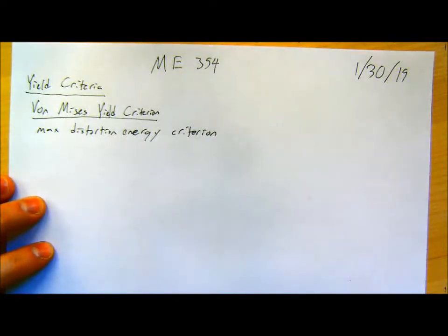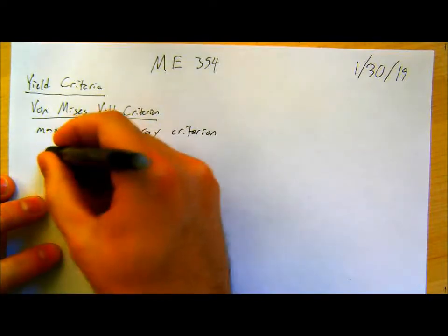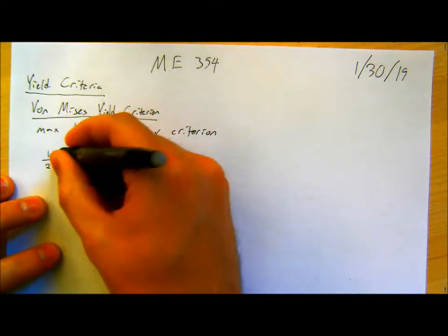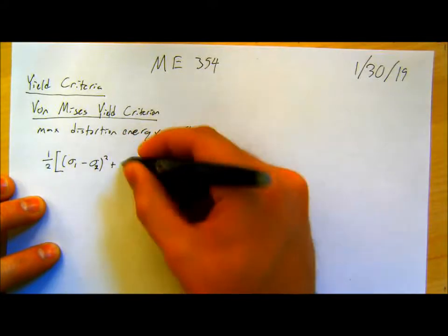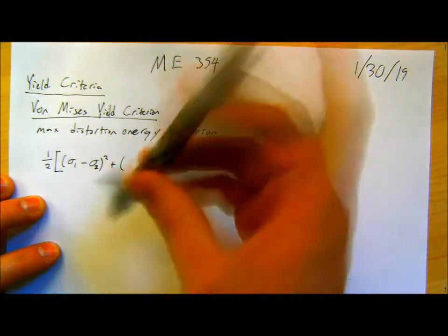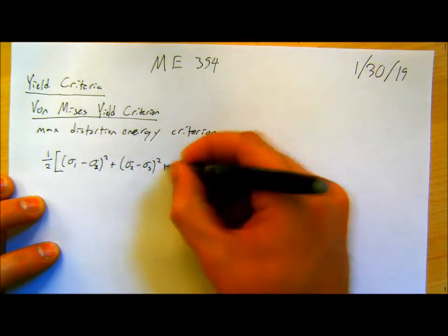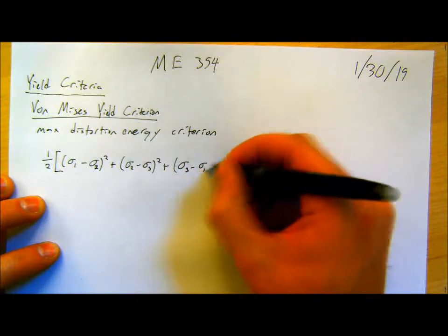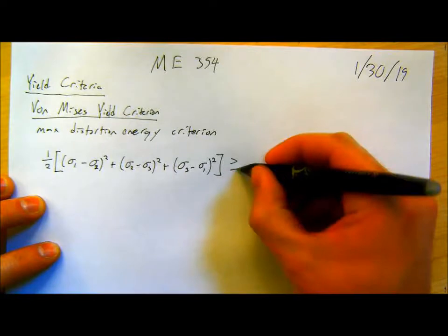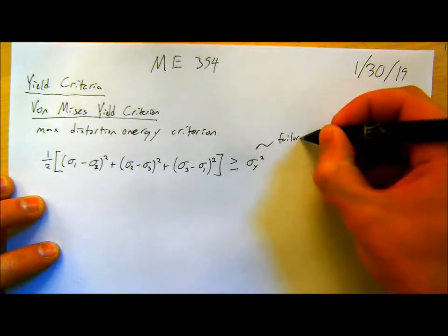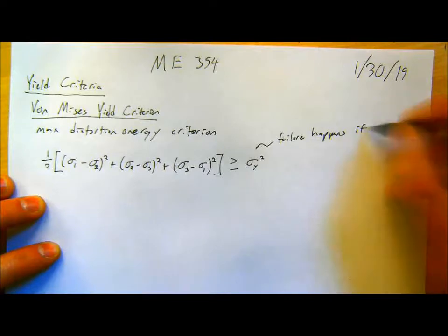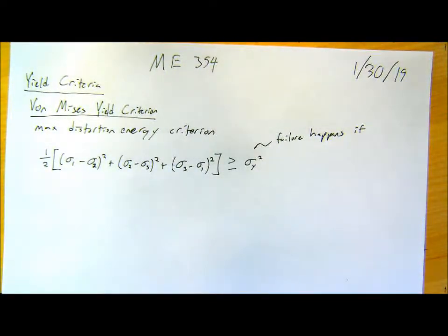Our formulation for that — there's a whole bunch of math behind it — but we end up with something that, in terms of principal stresses, is: sigma1 minus sigma2 squared, plus sigma2 minus sigma3 squared, plus sigma3 minus sigma1 squared, and we say failure happens when that's greater than or equal to the yield strength squared. This is the general three-dimensional criterion, and it gets simplified in 2D.